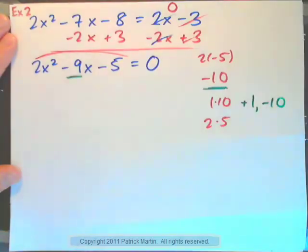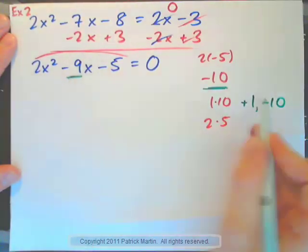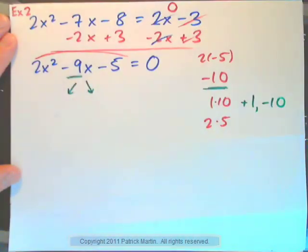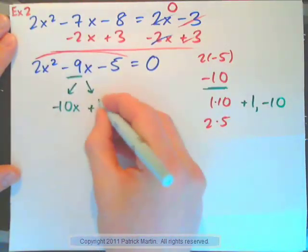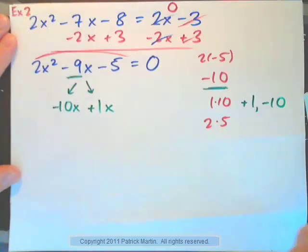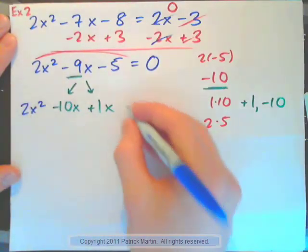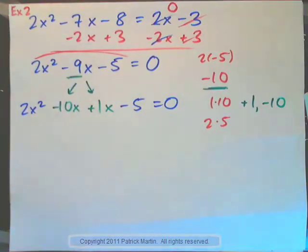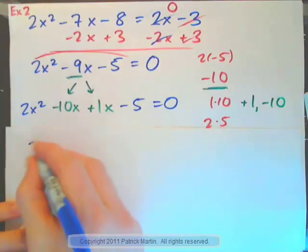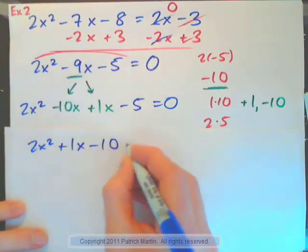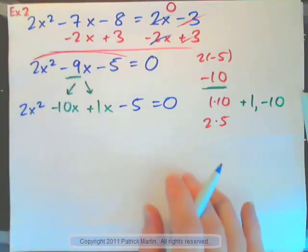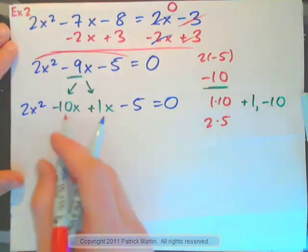Two numbers that multiply to negative 10 and add to negative 9 would be positive 1, maybe, and a negative 10. Would that work? If you add them, you get negative 9. If you multiply them, you get negative 10. So, we could write this as negative 10x plus 1x, for example. And have 2x squared minus 10x plus 1x minus 5 equals 0.